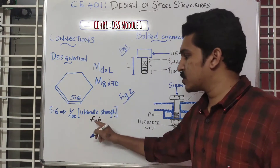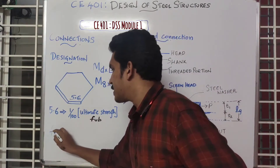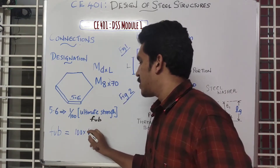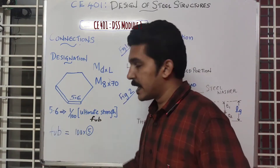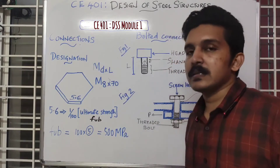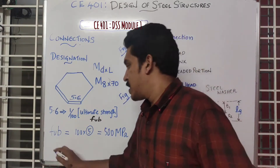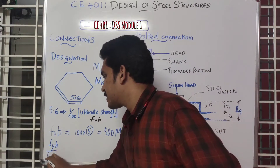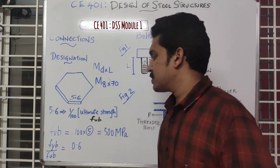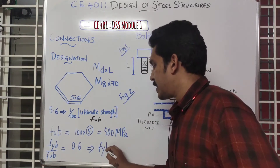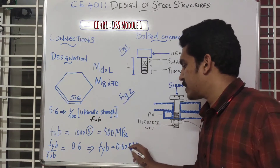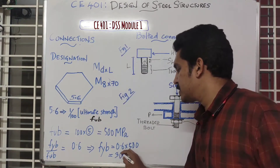The ultimate strength of a bolt is denoted FUB. For grade 5.6, FUB = 500 MPa. The yield strength divided by ultimate strength equals the second part of the grade, which is 0.6. Therefore, the yield strength FYB = 0.6 × FUB = 0.6 × 500 = 300 MPa.